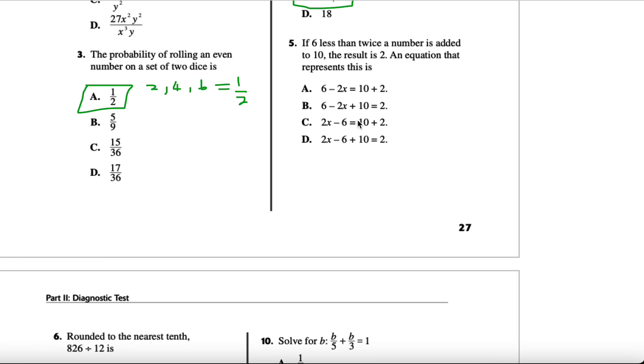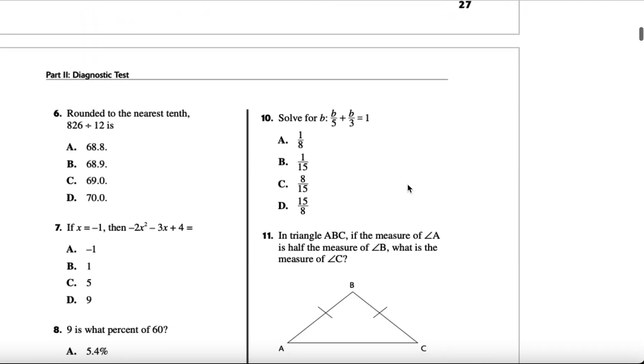Number 5: if 6 less than twice a number is added to 10, the result is 2. An equation that represents this is - twice a number is 2 times x, and then 6 less than that. So we subtract 6. Then it's added to 10, so we add 10 to this, and they said it's equal to 2. So it looks like D resembles that expression.